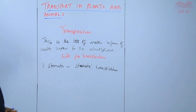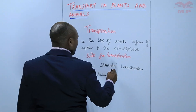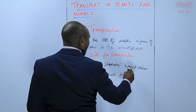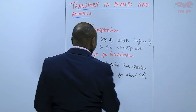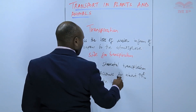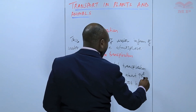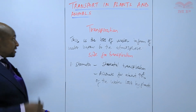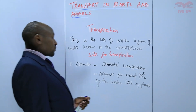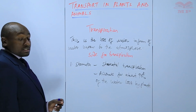And this stomatal transpiration accounts for about 90% of the water lost by plants. So majority of the water that is lost by plants is lost through the stomata. And we know that stomata are found in the leaves.